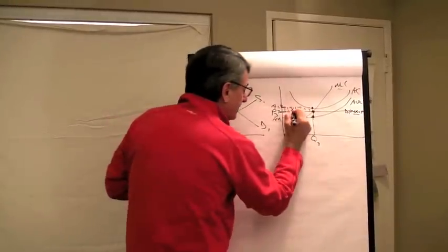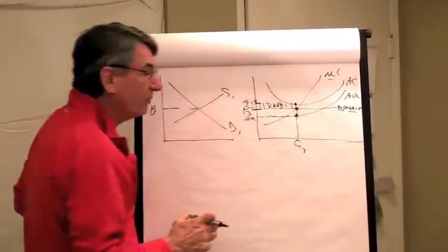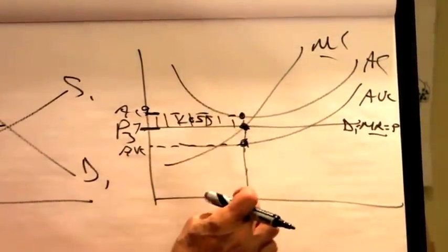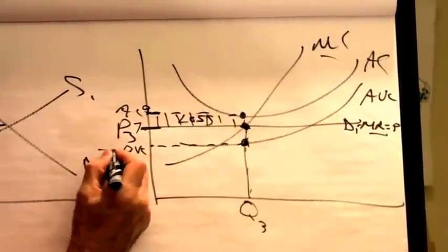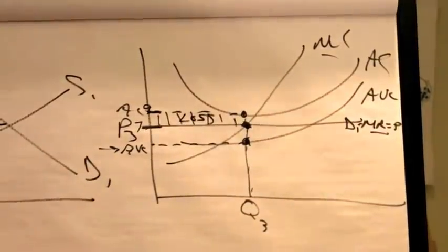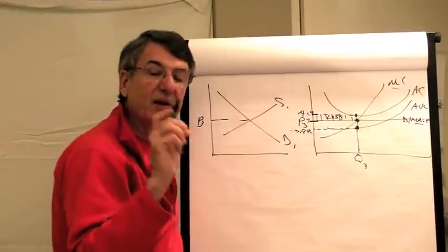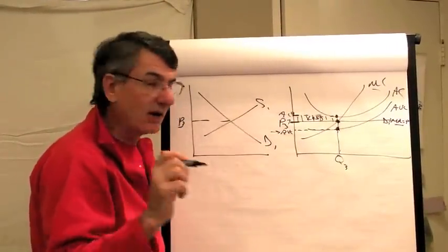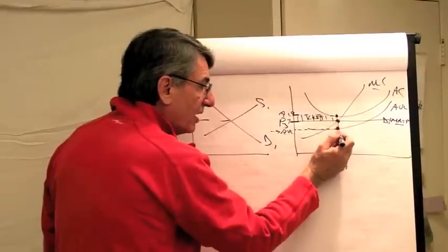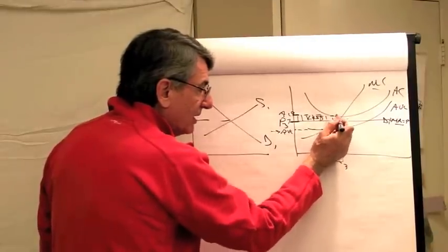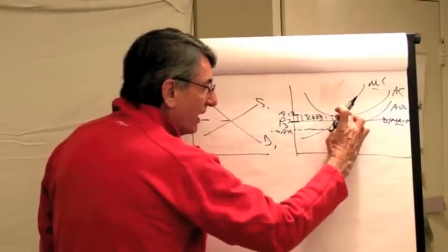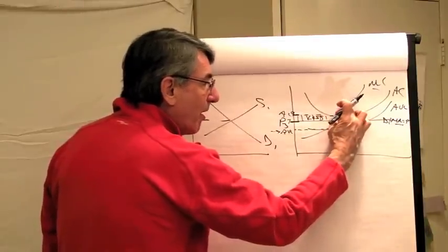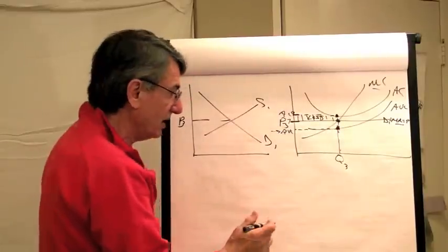Will the firm produce at a loss? Yes — provided that the price is sufficient to cover all of their variable costs. If the price covers all variable costs, they're better off to produce than to shut down, because if they shut down they lose all of their fixed costs. That is the gap between the average cost and the average variable cost. But if they produce, they just lose some part of their fixed costs, so they're better off to produce than to shut down.